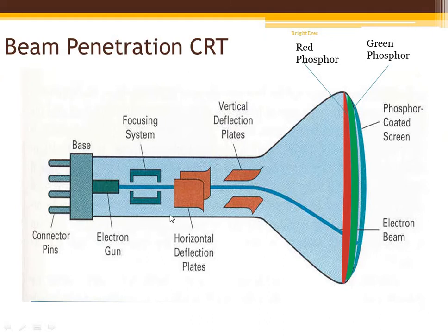First we will discuss beam penetration CRT, but let us first review the basic working of CRT and its components. As you can see, there is an electron gun which is actually a cathode that emits electrons when it gets heated. Then there is a focusing system, which is required because we need a highly focused electron beam so that electrons emitting from the electron gun do not get scattered inside the tube.